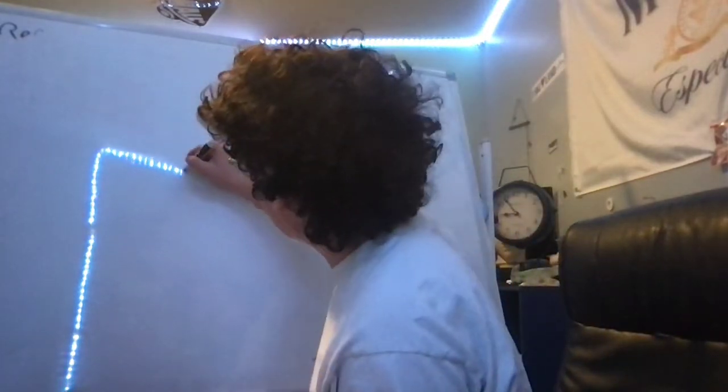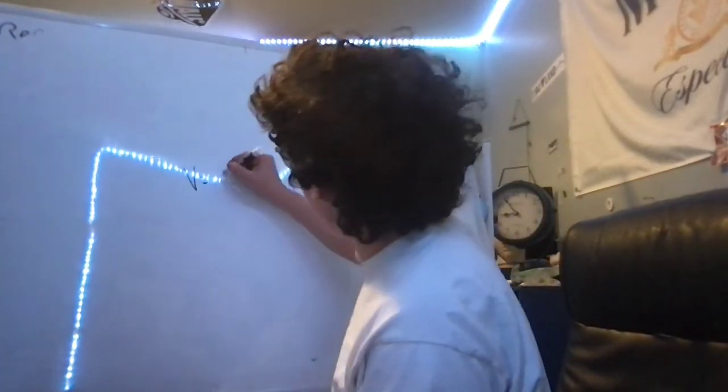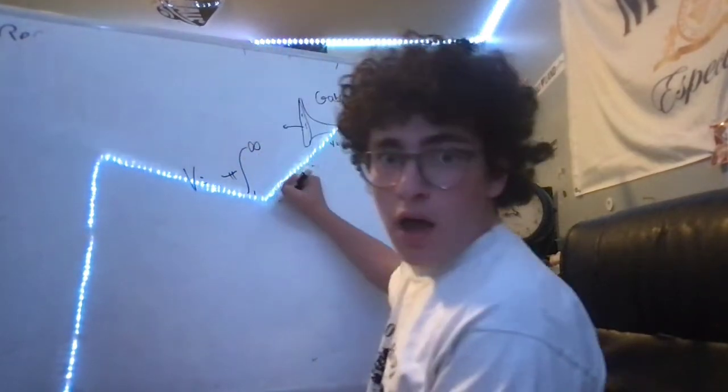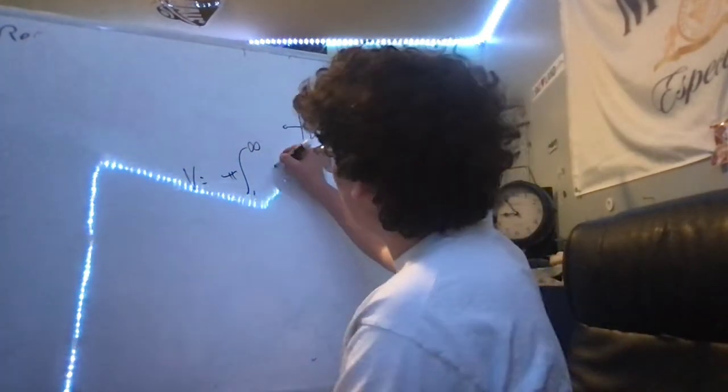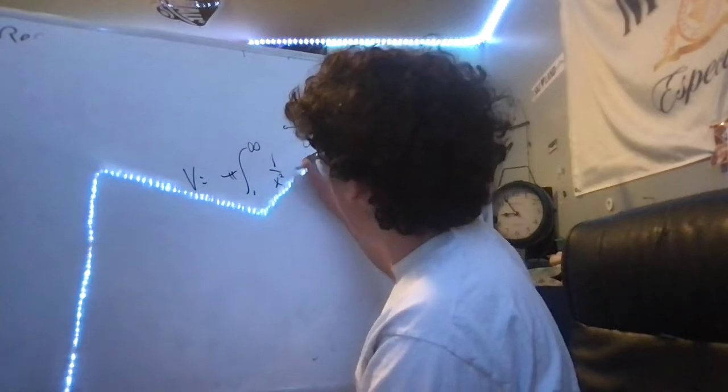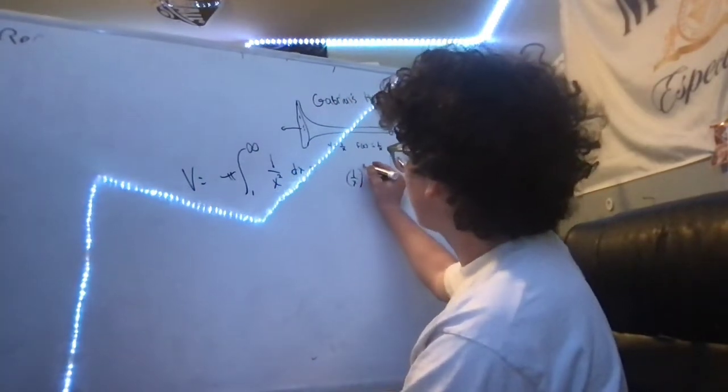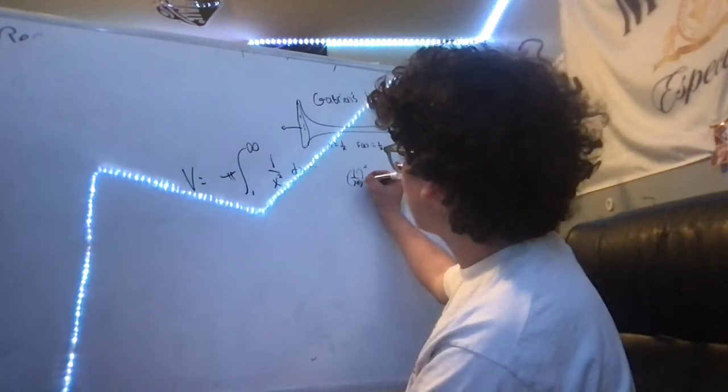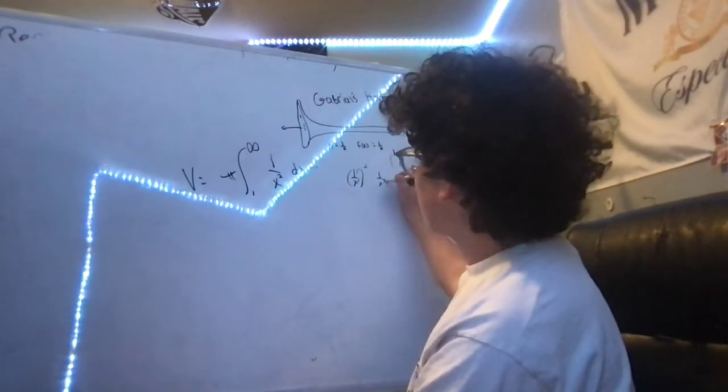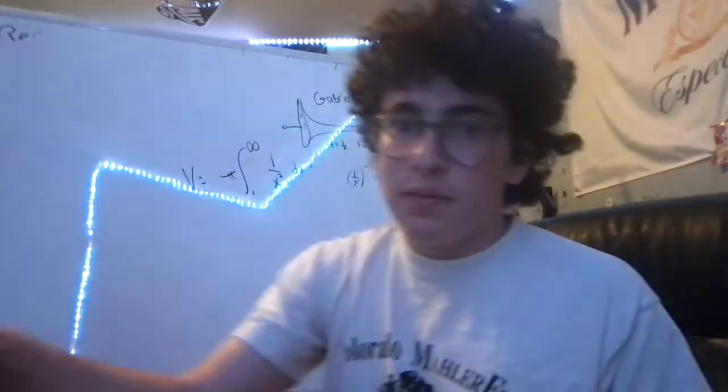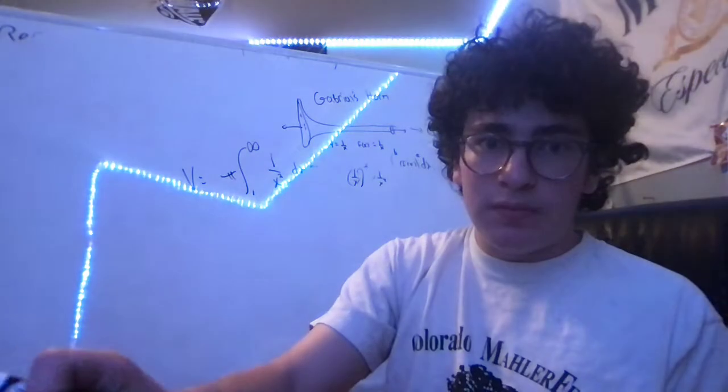The volume is equal to pi integral from 1 to infinity of 1 over x squared dx. If you remember, we can say that 1 over x quantity squared is the same thing as squaring this and squaring this, which is just 1 over x squared.